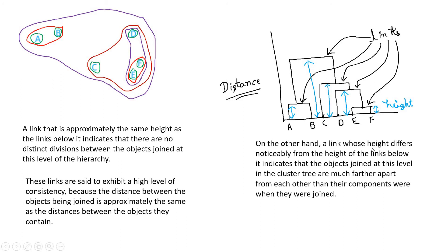On the other hand, a link whose height differs noticeably from the heights of the links below it indicates that the objects joined at this level in the cluster tree are much further apart from each other. For example, the AB cluster and the CDEF cluster — the link joining them has a much greater height compared to the links just below it, which are comparatively very small. This clearly indicates a huge gap between the AB cluster and the CDEF cluster, which you can also see from the 2D data set.